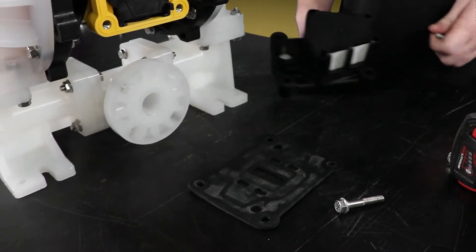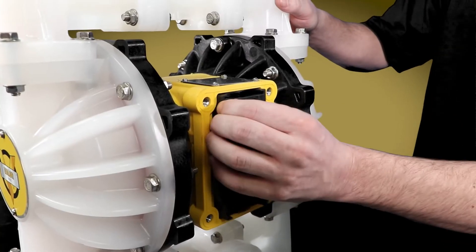Beneath the gasket is the main air valve assembly which you can now remove from the pump.